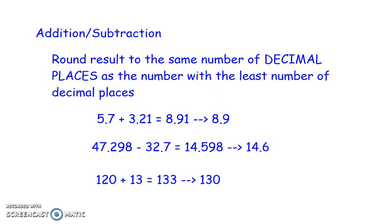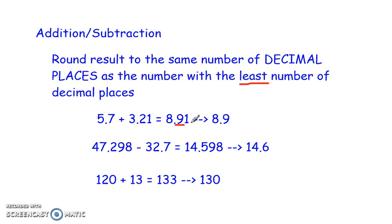When you are adding or subtracting numbers, you round the result to the same number of decimal places as the number with the least number of decimal places. So if we look at this first example, 5.7 plus 3.21 — if you plug that into your calculator, your calculator will tell you 8.91. However, when we're going to round this answer, the 5.7 has one decimal place and the 3.21 has two decimal places. We're rounding to the same as the one with the least, so our final answer should have one decimal place — rounded to the tenths place. Look at one place beyond: 1 does not round it up. So my answer would be 8.9.